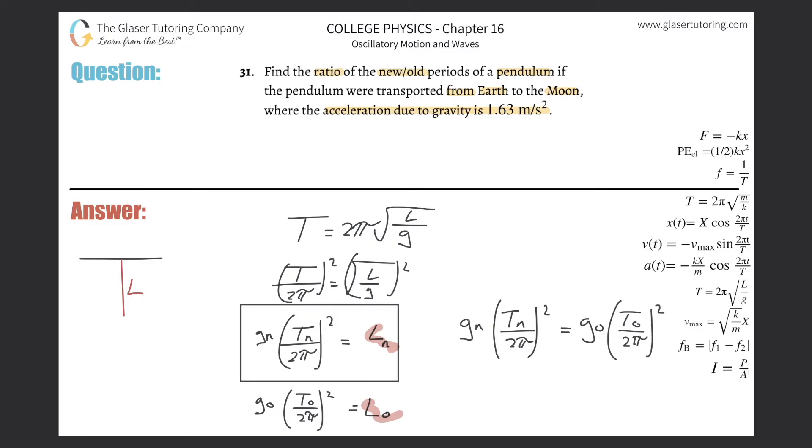This is going to be the new acceleration due to gravity multiplied by the new period divided by 2π, that whole thing squared will equal the old acceleration due to gravity multiplied by the old period divided by 2π, and that thing squared. Now notice, mathematically speaking, we can cancel the 2π's. So basically, I'm left with now this, that the new acceleration due to gravity multiplied by the new period squared, that's going to equal the old acceleration due to gravity multiplied by the old period squared.